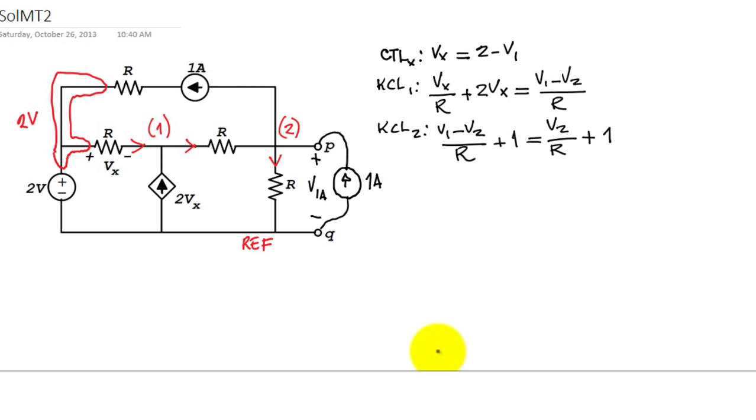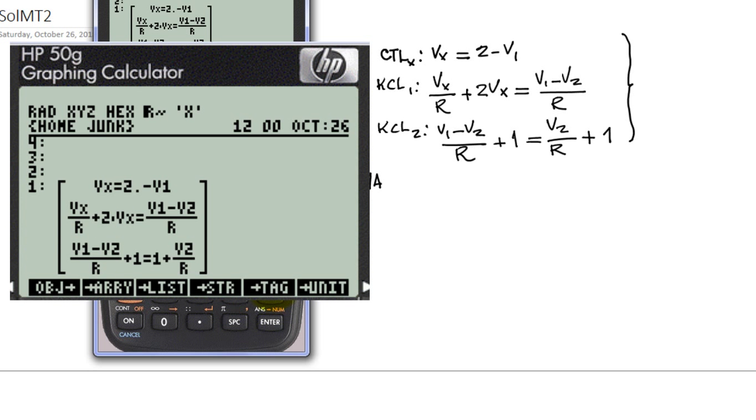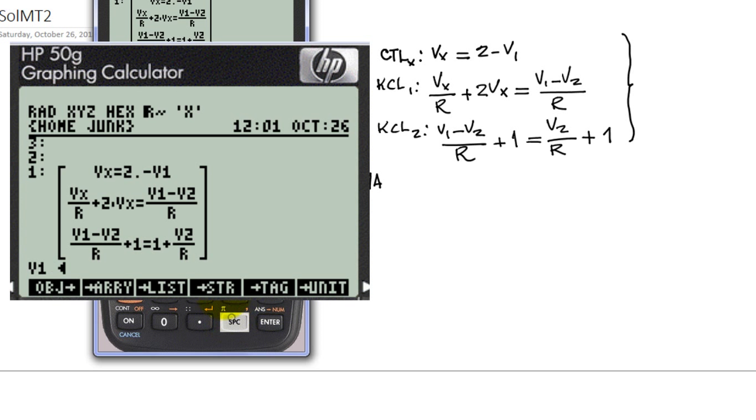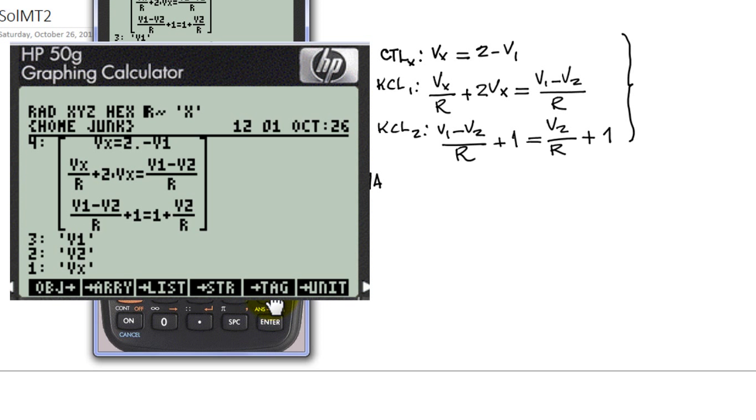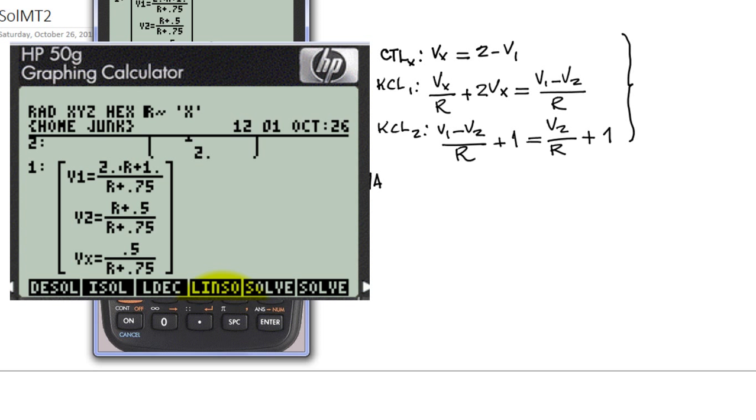We are ready. We have three unknowns, which are V1, V2, and Vx. And we have three equations. Let's solve them. I have written in the equations in the calculator already. And now, we group them into an array like that. That is a system of equations. We specify the unknowns. They will be V1, V2, and Vx. We want to make an array with those two to specify those are the unknowns. And we are ready to ask the calculator for the symbolic solver, linear solver.